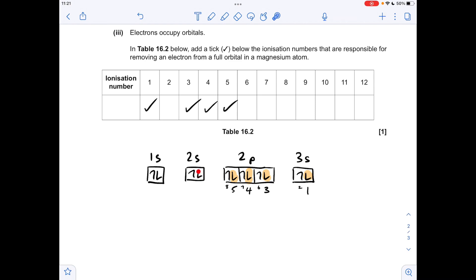Ionization energy nine is going to be taking this one out. That's a full orbital. This will be 10, so we don't tick that one. This one will be 11, so we do tick that one. And 12 we don't tick.